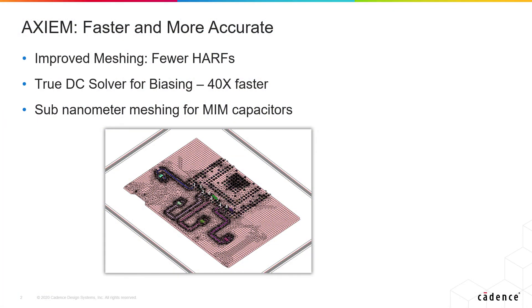Let me come back to the DC solver. Harmonic balance simulations need a DC bias point in the S-parameters, especially for power amplifier designers. In the new version of Axiom V15, there is a much faster DC solver — it essentially just solves for the DC currents, and it is up to 40x times faster. Power amplifier designers will love it because they can run sweeps much faster with that solver.